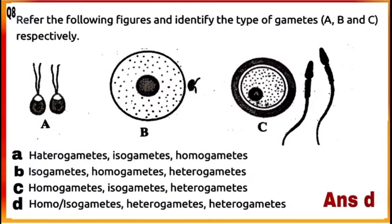Question 8: Refer to the following figures and identify the types of gametes A, B, and C respectively. In Figure A, these are isogametes of Cladophora, where gametes are similar in appearance. Figure B shows heterogametes of Fucus, where male and female gametes differ from each other. Figure C shows heterogametes of Homo sapiens. So the correct answer is D: A, B, and C are isogametes, heterogametes, and heterogametes respectively.